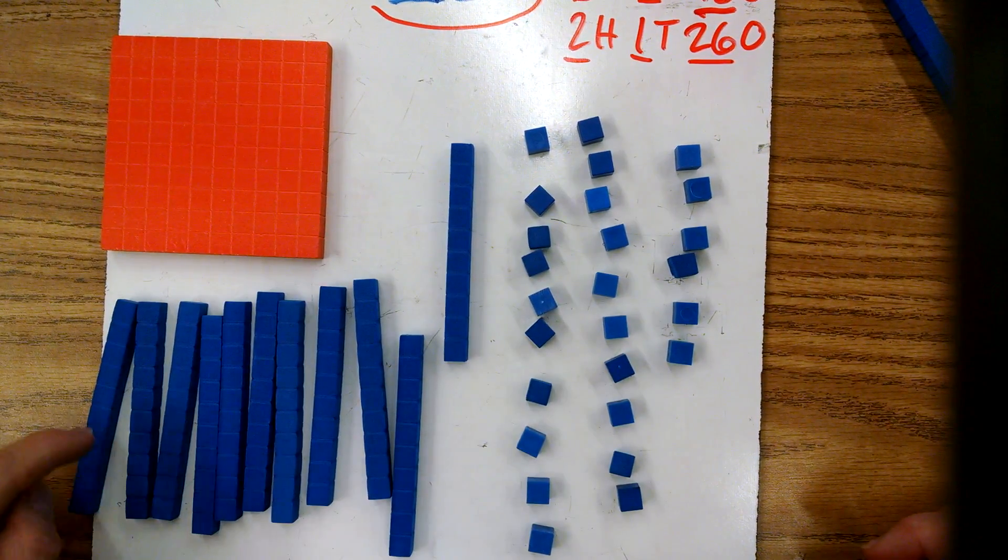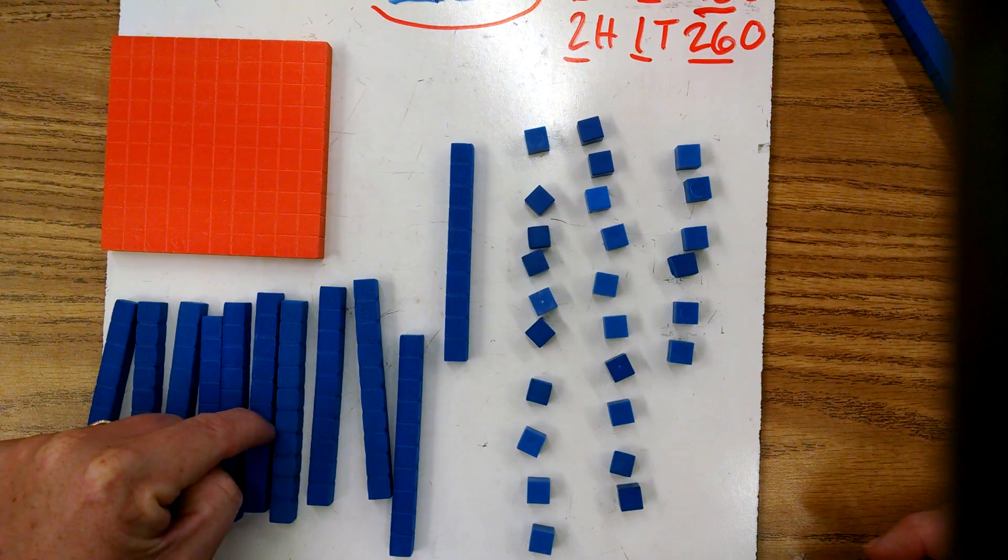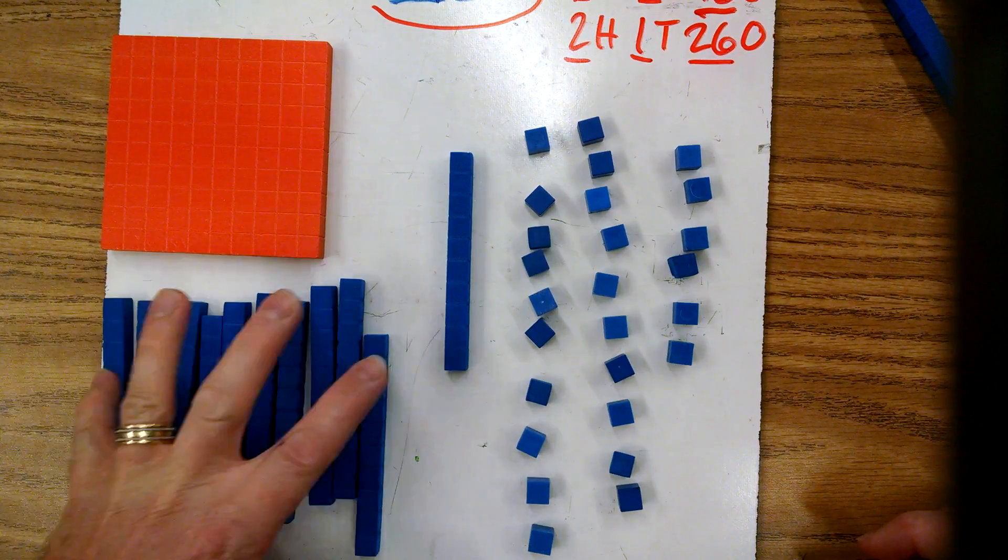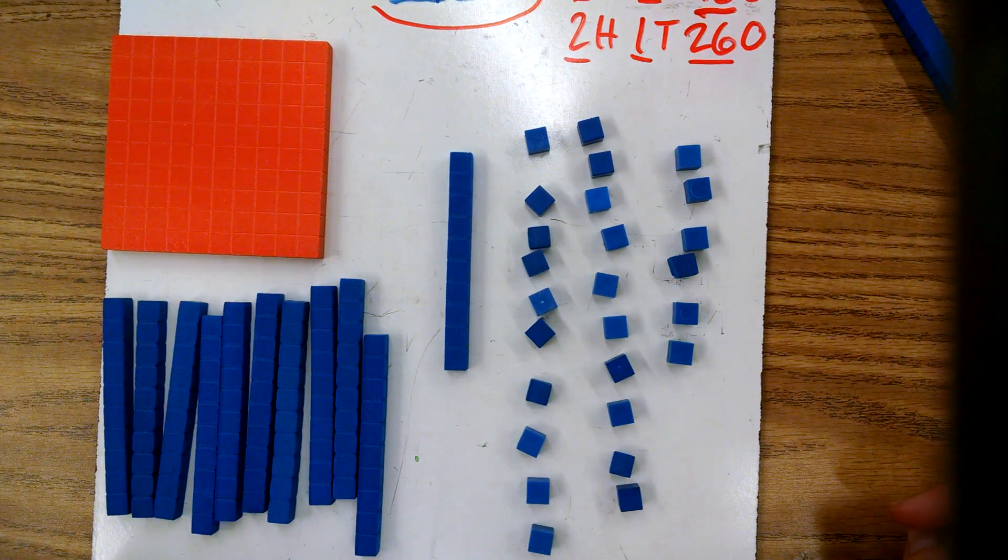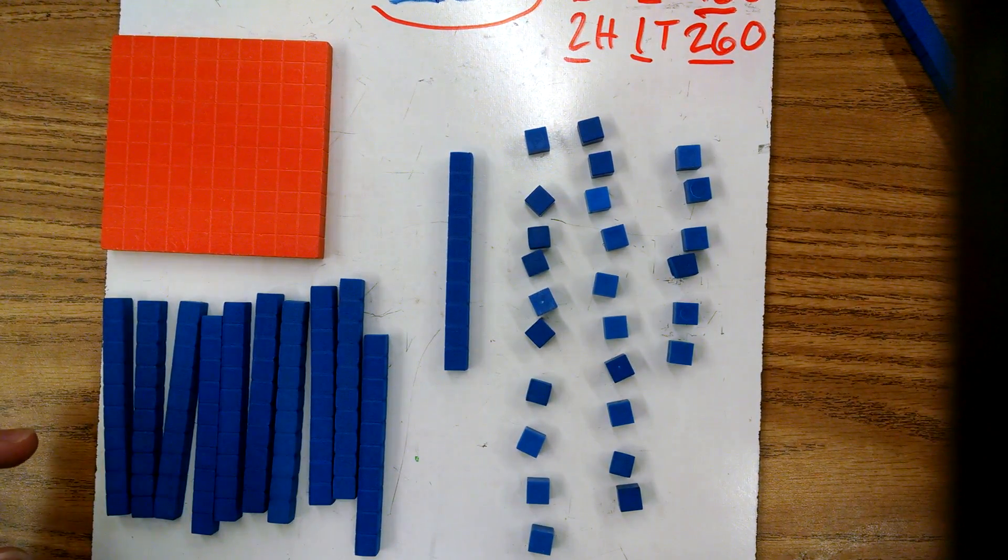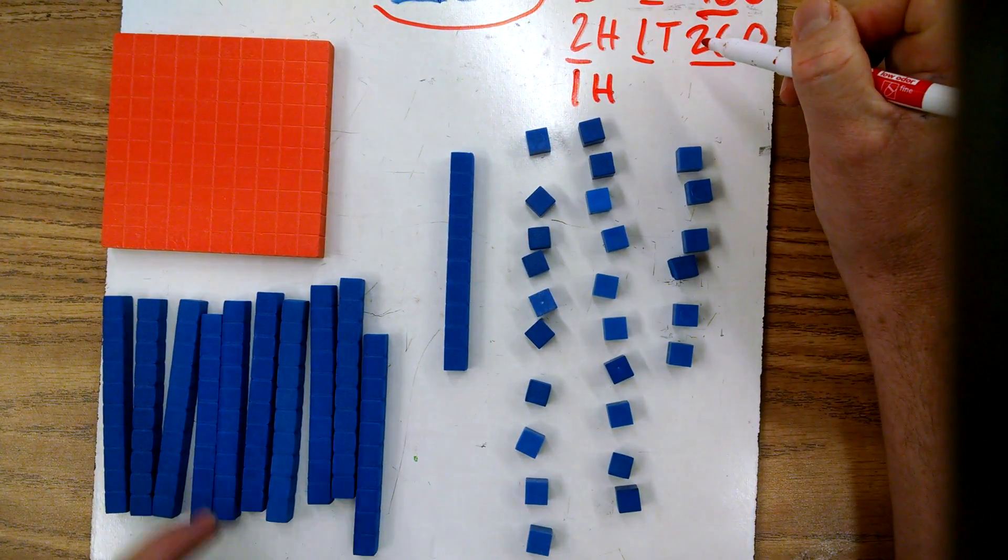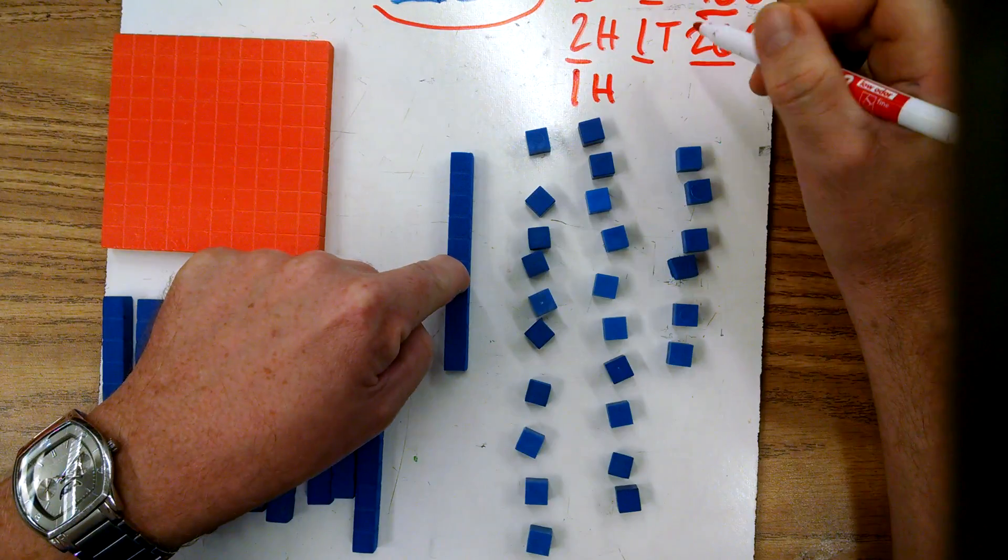So you could circle that and group it into a hundred. So now that's a whole different combination. Now we have 100, we have 11 tens, and those 26 ones.